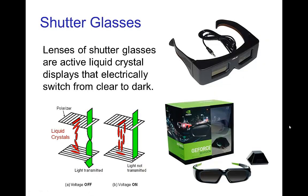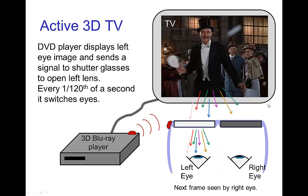Another system that doesn't use polarization directly is shutter glasses. These glasses actively open and close using an active liquid crystal display built into the glasses themselves. A 3D player sends a signal simultaneously telling the glasses which eye should be open for each image, then the next frame the other eye opens. The advantage is the TV itself doesn't need to do any polarization — all the switching is done actively by the glasses.